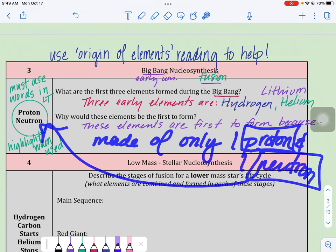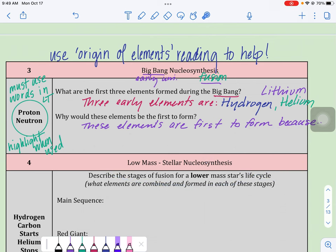So again, these are our must use words. Once you use them, highlight them up on your screen. So these elements were first to form because of their mass. It was so small and so simple. All that was needed was one proton, one neutron, and those elements could be created.